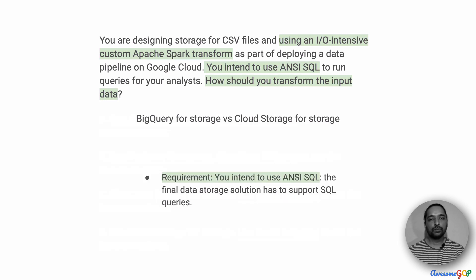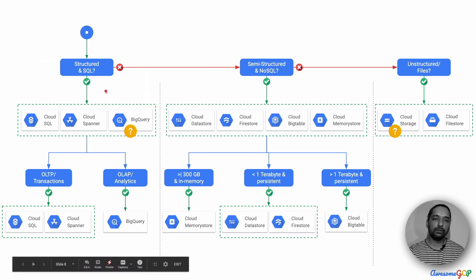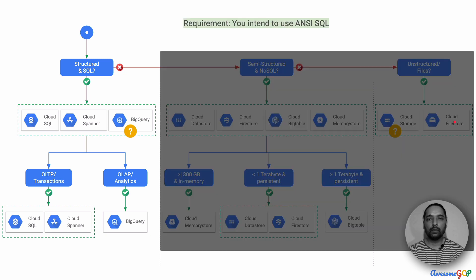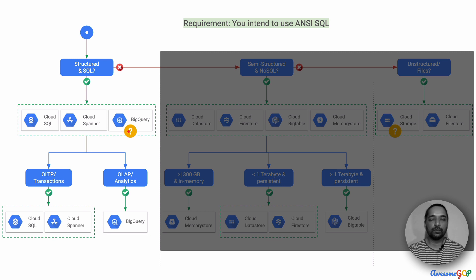Let us first look at storage. Should we use BigQuery or should we use Cloud Storage? The requirement is that we have to use ANSI SQL. So let's get to our trusted flowchart that lists out the various storage options that we have. The ones with SQL are listed here. These would be the ones to use when we have semi-structured or non-SQL data, and for unstructured data like files, we would have either Cloud Storage or Cloud Filestore. Since we have to use ANSI SQL, the only block useful for us is the SQL set, and because our consideration is between Cloud Storage and BigQuery, we can stop right here because BigQuery is the only remaining choice.